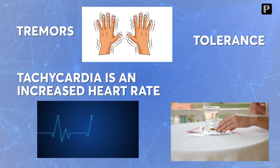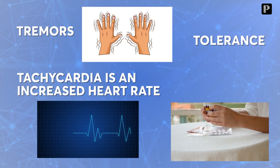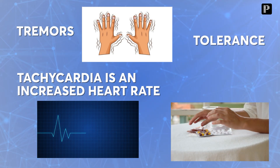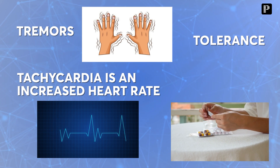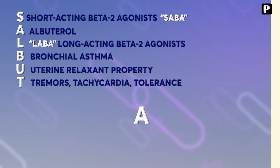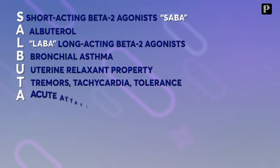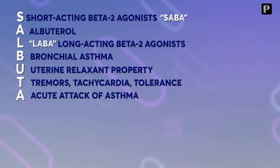What do we mean by tolerance? If you use the drug repeatedly again and again, the drug will not work and you have to increase the dose. The next letter A stands for acute attack of asthma — but salbutamol is not used for prophylaxis, because it can develop tolerance with long-term use.